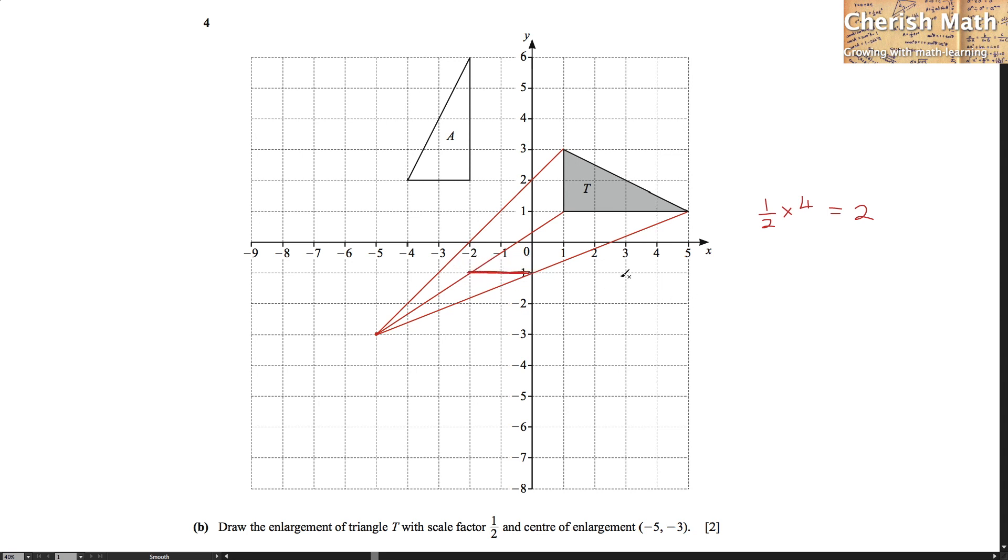And what about the height of triangle T when transformed to its image? That would be using the same 1 half as the scale factor multiplying the height of triangle T which is originally at 2 units. So, we are getting 1 unit. And this is the answer where the height is 1 unit for the image of triangle T. We just have to connect the third line here and it produces the image of triangle T that we are aiming to get at.